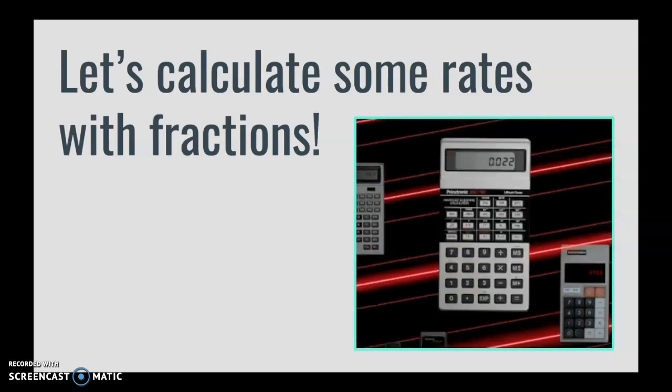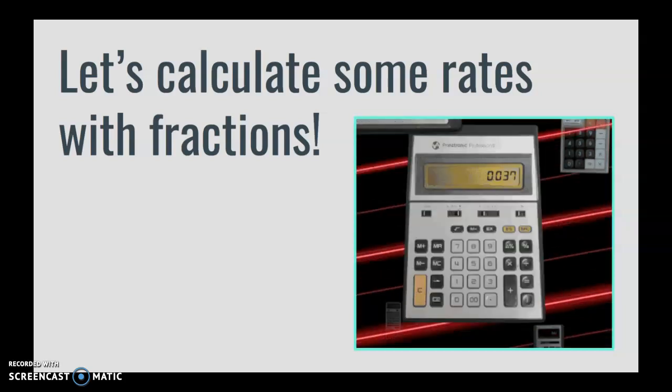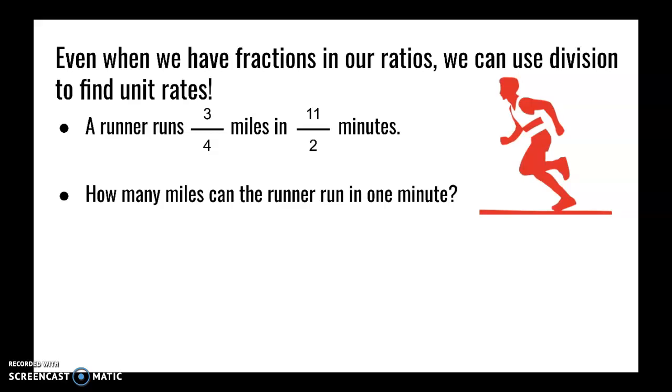Let's calculate some rates with fractions. Even when we have fractions in our ratios, we can use division to find unit rates. A runner runs 3/4 mile in 11/2 minutes. How many miles can the runner run in one minute?